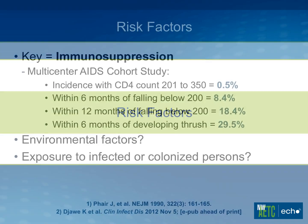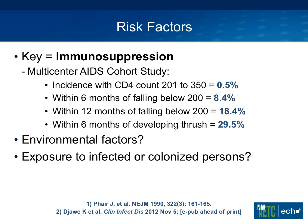The key risk factor for pneumocystis is immunosuppression. In the multicenter AIDS cohort study (MACS), the incidence of PCP with a CD4 count above 200 was only 0.5%. However, within six months of falling below 200, incidence was 8.4%, and within 12 months it was 18.4% — without adequate prophylaxis. Within six months of developing thrush, the incidence was nearly 30%. Thrush is a very important marker for PCP risk, indicating advanced immunosuppression.